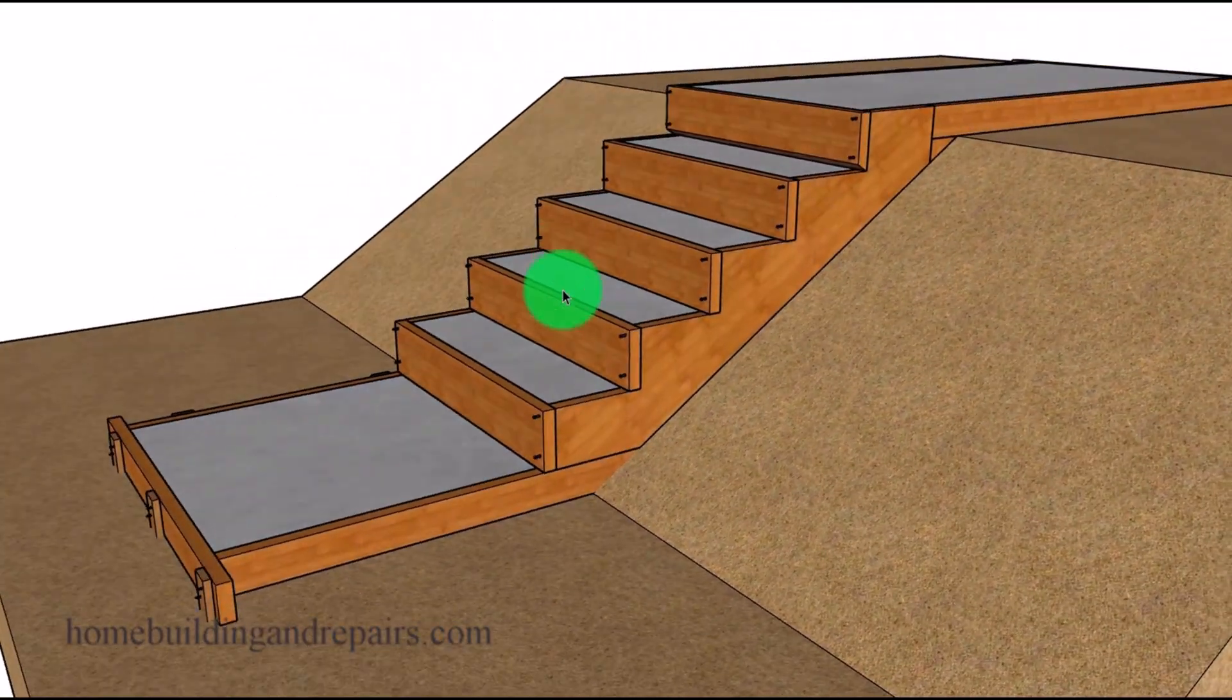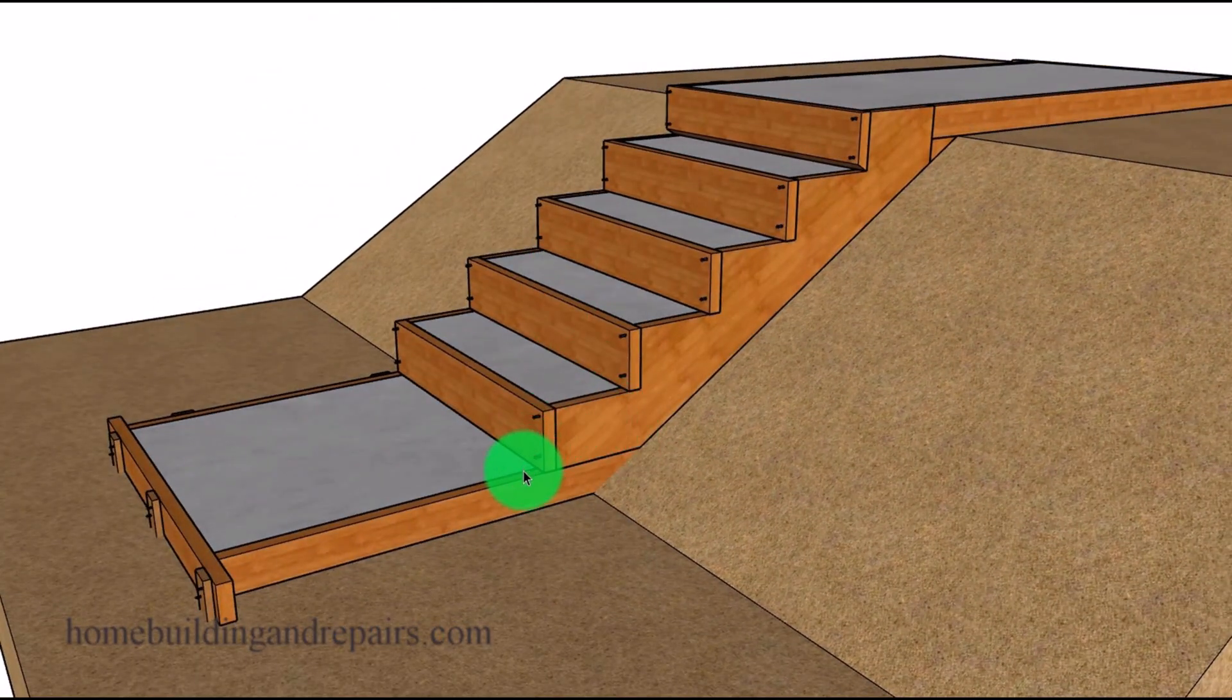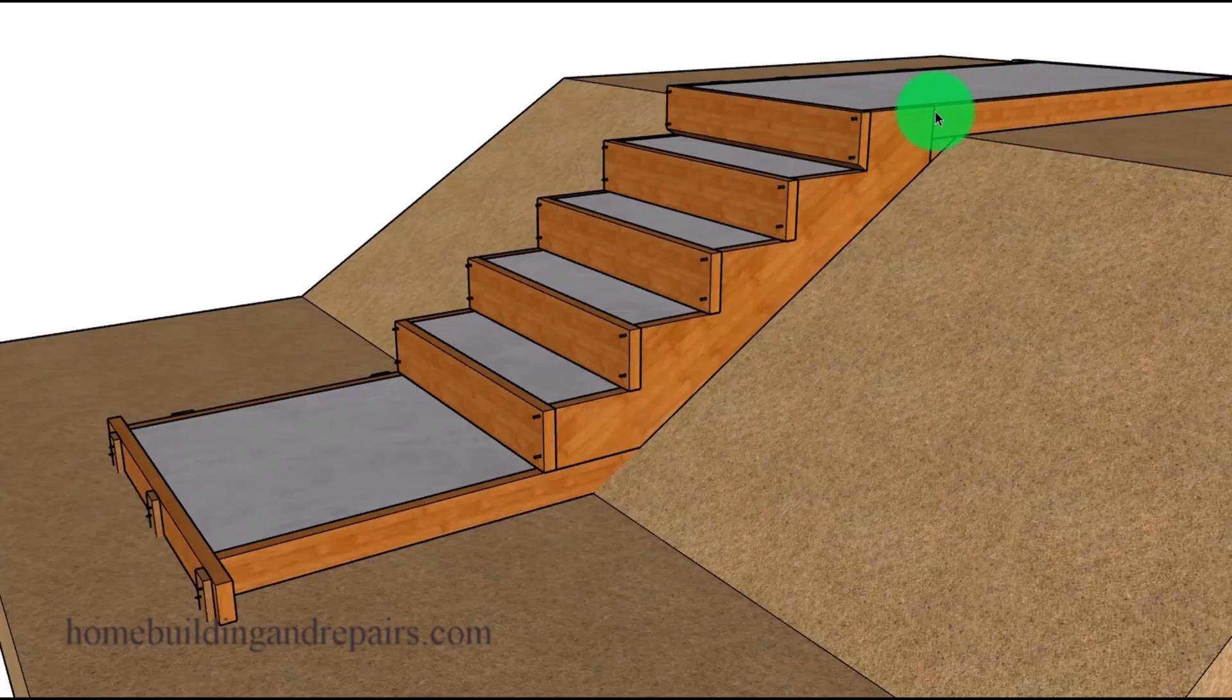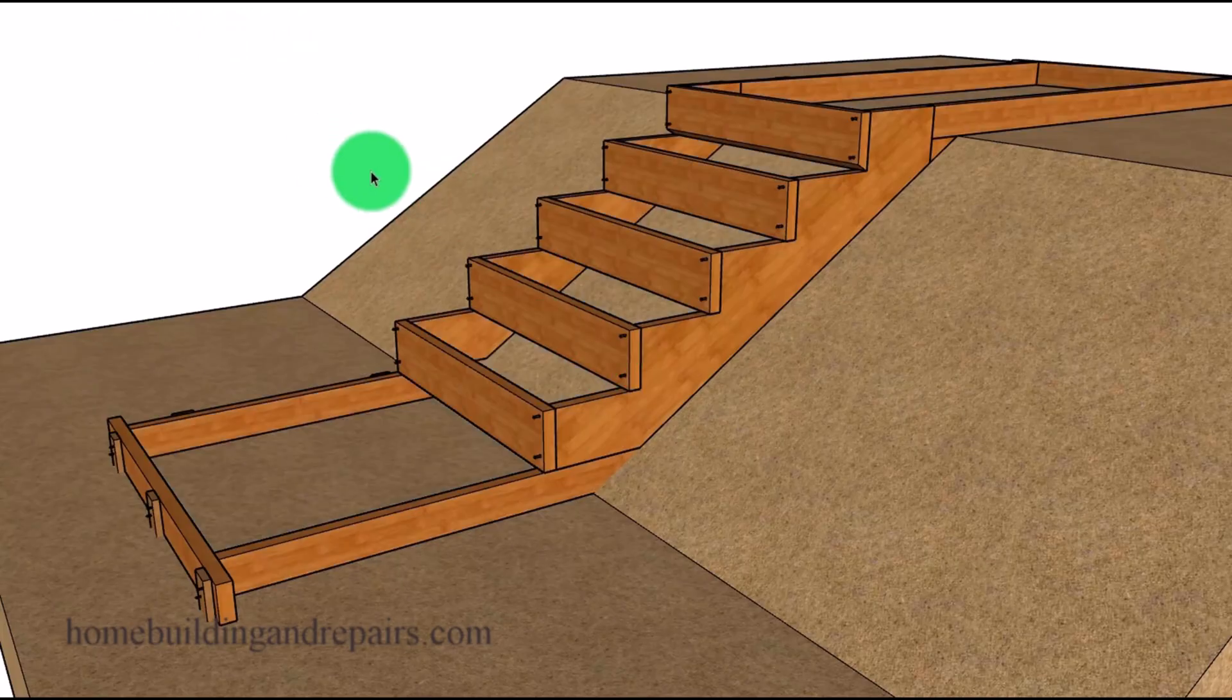Use some stair stringers, set them on top of the lower forms and either under or have the forms above but up against like we have here. And then you would simply attach your risers, maybe some 2x8s to the stringers with screws or nails that can be removed easily.